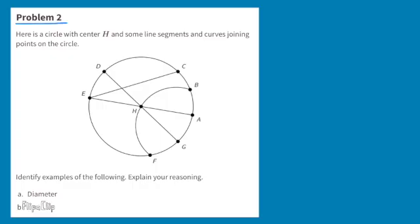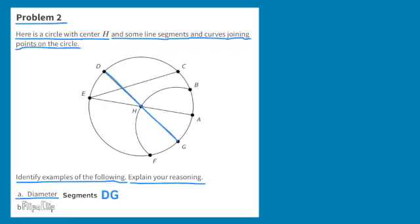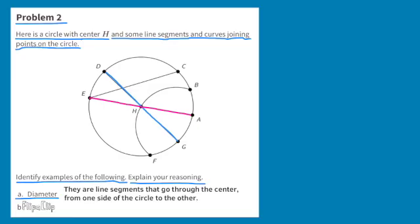Problem number two. Here is a circle with center H and some line segments and curves joining points of the circle. Identify examples of the following. Explain your reasoning. A. Diameter. Line segments DG and AE are line segments that represent the diameter. They are line segments that go through the center from one side of the circle to the other.